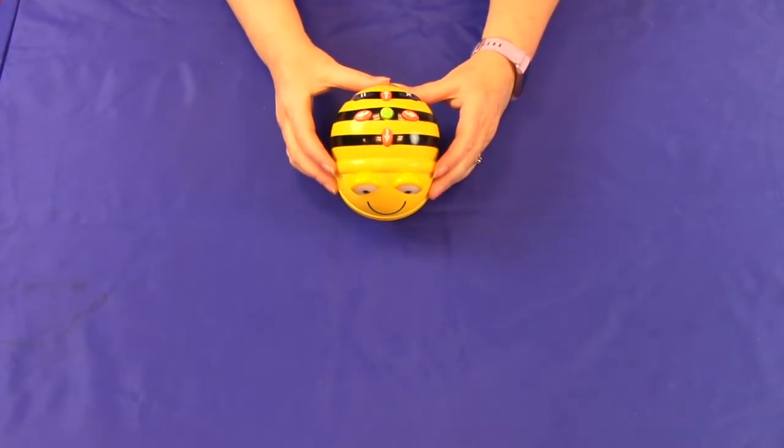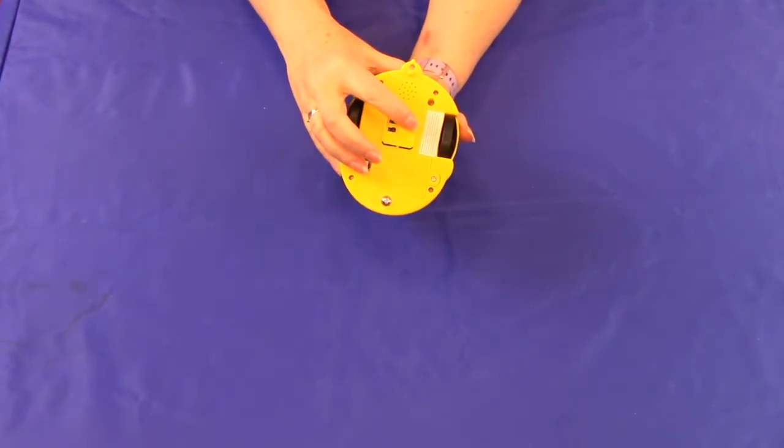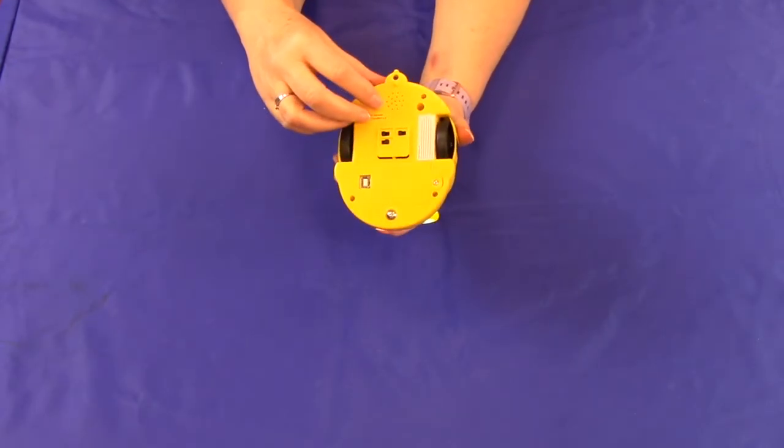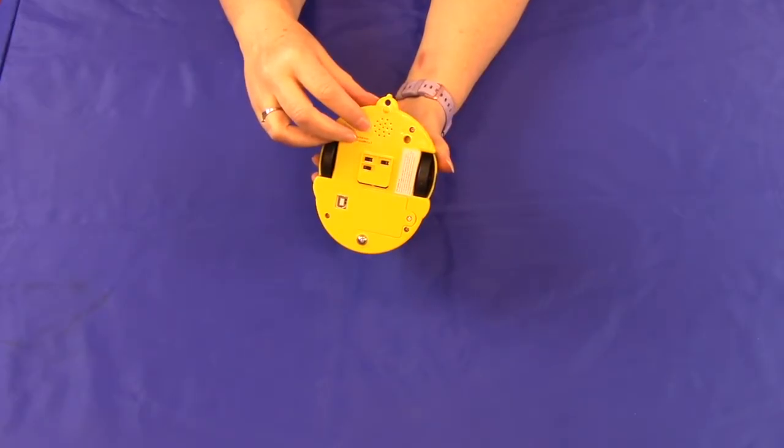Once you get the BeeBot home, your kids can simply turn it over and switch on the power button and the sound button on the underside of the Bee. It will work with just the power and not the sound on, but the sound is kind of fun.